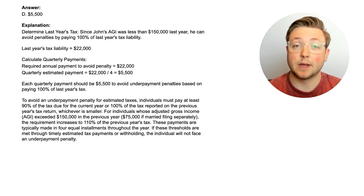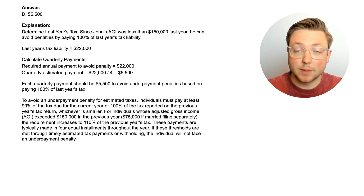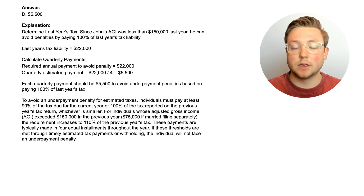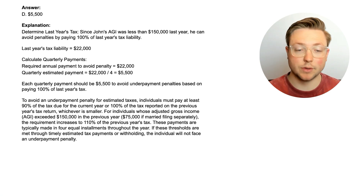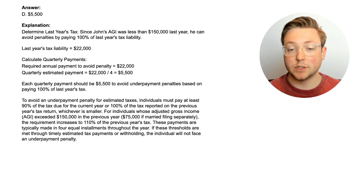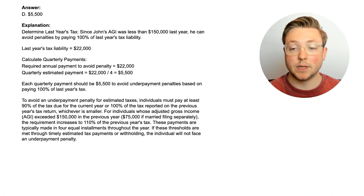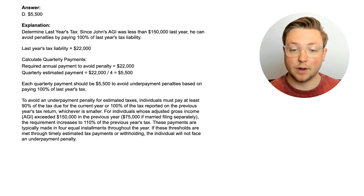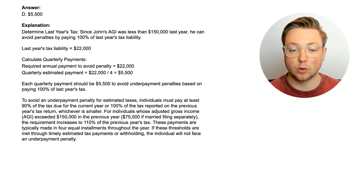The answer was $5,500. That does make sense — $22,000 divided by 4 is $5,500. To determine last year's tax: since John's AGI was less than $150,000, he can avoid penalties by paying 100% of last year's tax liability. So $22,000 divided by 4 equals $5,500, which he makes as quarterly payments.